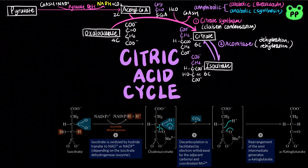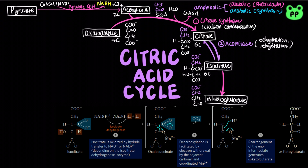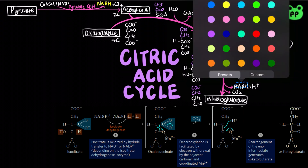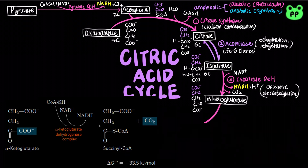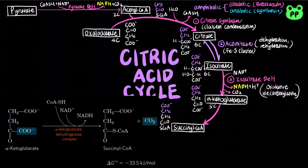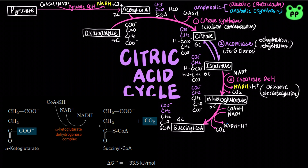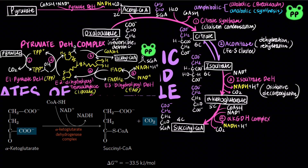In the next step, isocitrate undergoes oxidative decarboxylation to form alpha-ketoglutarate by the enzyme isocitrate dehydrogenase, which is coupled to the reduction of NAD+ to NADH. Next, alpha-ketoglutarate undergoes another oxidative decarboxylation to form succinyl-CoA by the enzyme alpha-ketoglutarate dehydrogenase complex, coupled to the reduction of NAD+ to NADH, while the rest of the energy of oxidation is conserved in the formation of the thioester bond of succinyl-CoA. The mechanism of alpha-ketoglutarate dehydrogenase complex is very similar to the pyruvate dehydrogenase complex covered in my previous video.